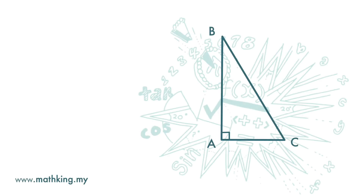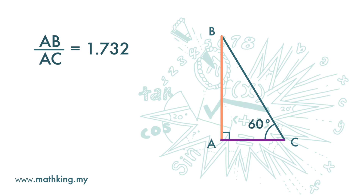Now let's look at this right angle triangle with an angle of 60 degrees. If we divide AB by AC — that is, we take the ratio of AB to AC — we will get 1.732, correct to three decimal places. The value of this ratio is fixed. As long as it is a right angle triangle and we have a 60 degree angle, the ratio of the opposite side to the adjacent side is fixed, which is 1.732.